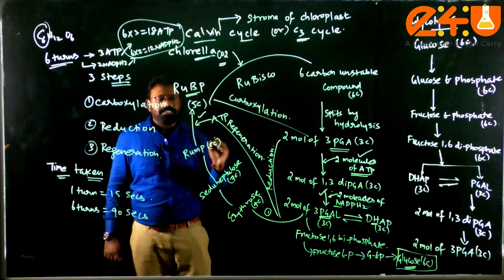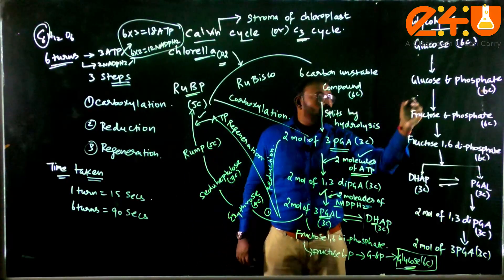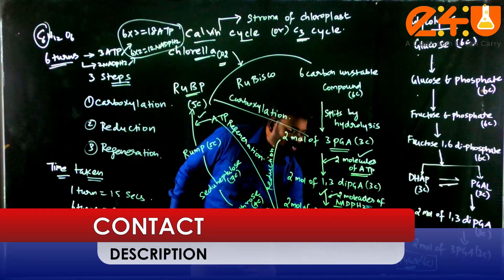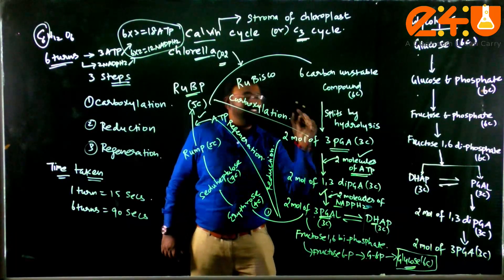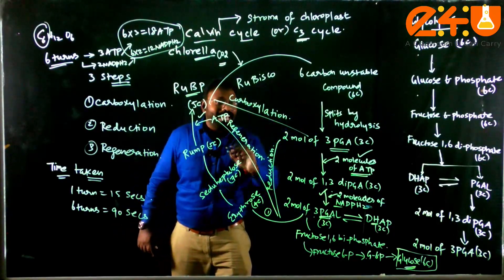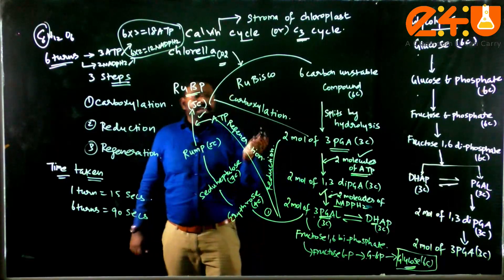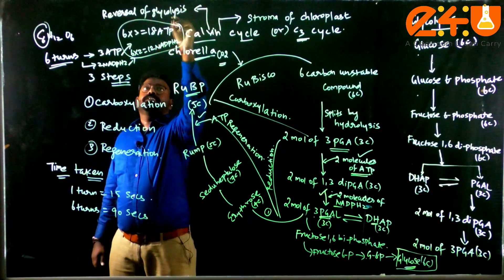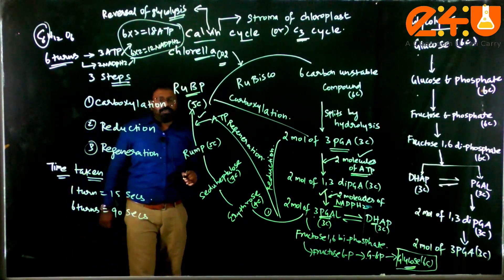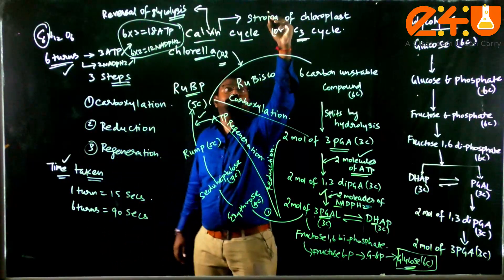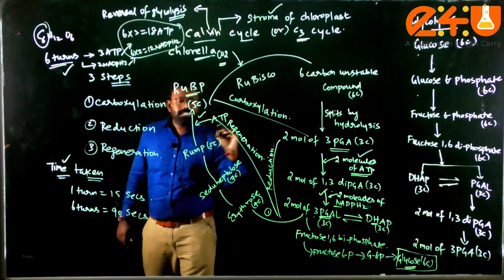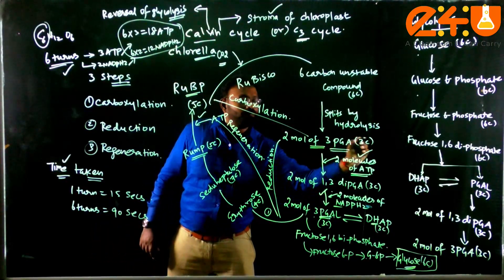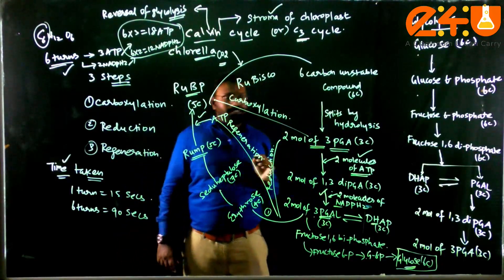In this pathway, what you should primarily learn is the glycolysis shortcut: glucose, glucose, fructose, fructose, PGAL, 1,3-diPGA, 3-PGA. The majority of reactions in Calvin cycle are solely dependent on glycolysis — that is why it can also be called the reversal of glycolysis. For competitive examinations, the number of turns, time taken, and site of occurrence are important MCQ points. In the C3 pathway, remember: RuMP forms RuBP, which gives rise to 3-PGA (3-phosphoglyceric acid). Thank you.